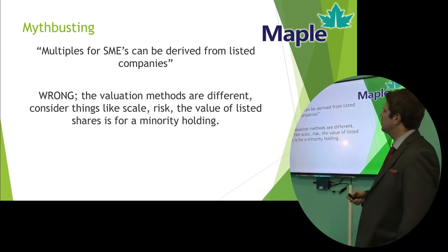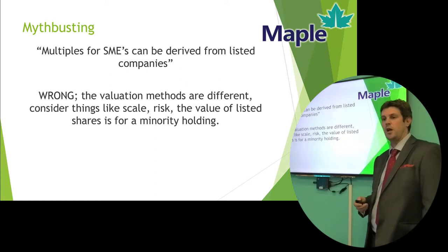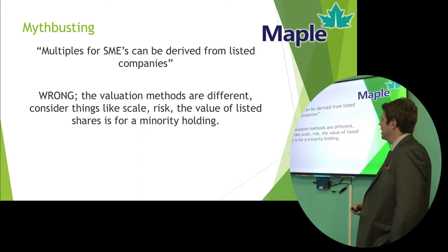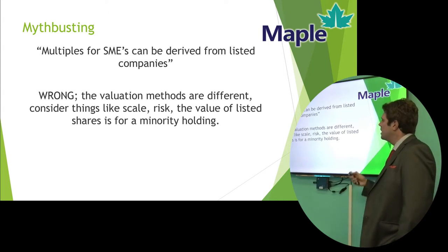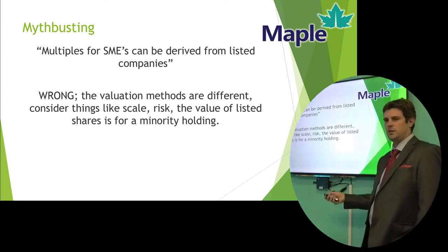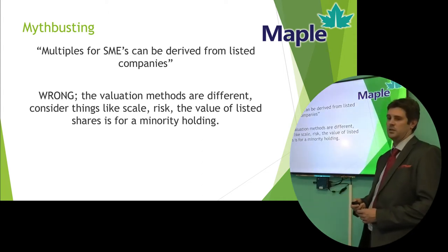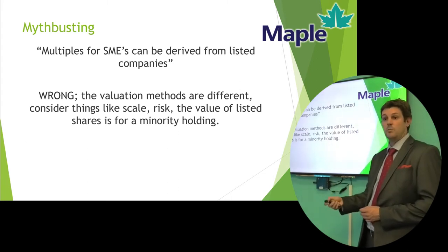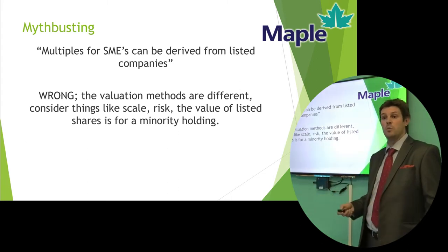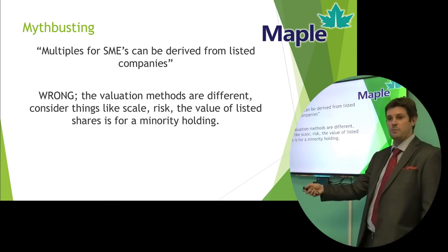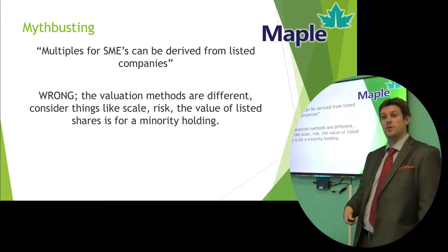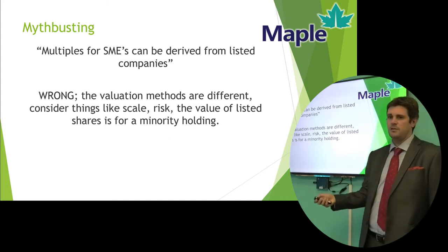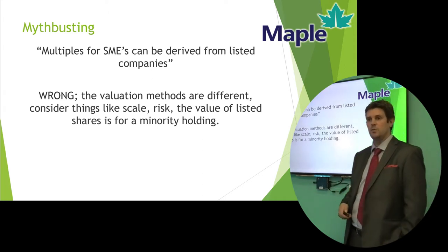Multiples for SMEs can be derived from listed companies. You may have heard of the price-earnings ratio on the stock exchange — that's effectively what the company's share price is worth divided by the shares in circulation and its performance. The valuation methods are quite different for stock exchange listed companies. One main reason is that the valuation of the share on the stock exchange is for a limited or minority share. If a buyout of a company is announced, the share price will rocket because they're then looking to acquire the whole company. Also, you have to consider scale and risk — a listed company tends to be a less risky investment than purchasing a small SME business.